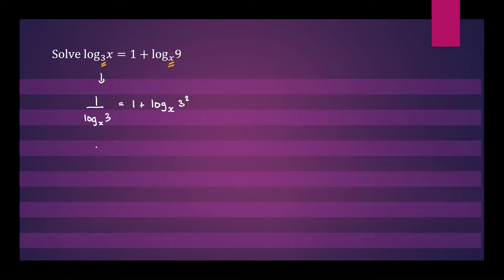So write down the left side again, 1 on log of 3 to base x. For the right side, let's bring down the 2 using the power rule. So that will give us 1 plus 2 times the log of 3 to base x.